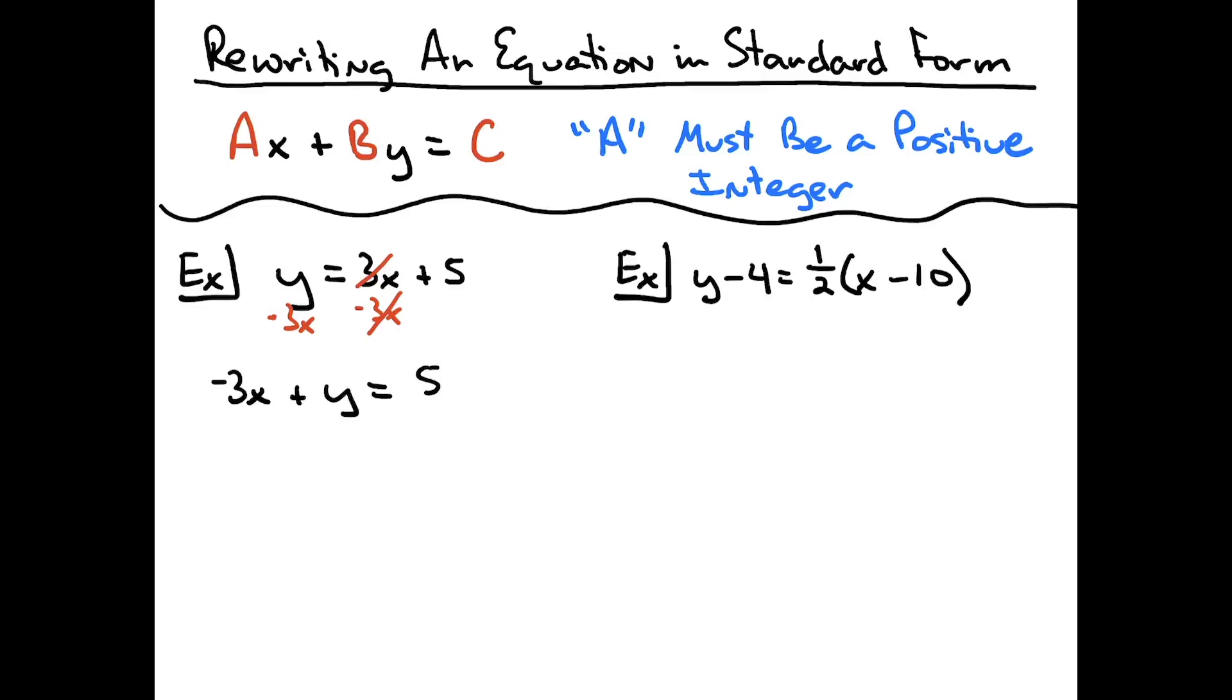Now at that point I then have to stop and look at what I have. I have a negative 3x plus y equals 5. So as far as terms being in the correct order for a standard form, I have that.